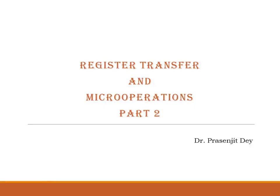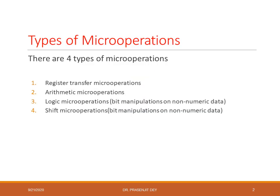In this class we will discuss part 2 of register transfer and micro-operations. There are 4 types of micro-operations: first is register transfer micro-operation, which we explained in part 1; second is arithmetic micro-operations; third is logic micro-operations, which deals with bit manipulations; and fourth is shift micro-operations, which also deals with bit manipulation.